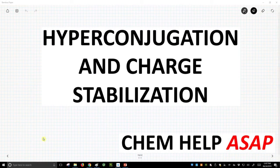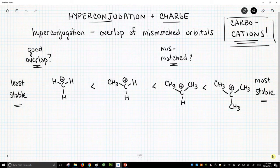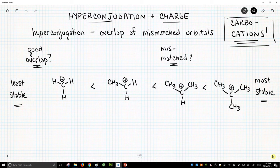Good day from ChemHelpASAP. We will now talk about how hyperconjugation affects charge stabilization. This is an effect that we typically see only with carbocations. So what is hyperconjugation? Hyperconjugation is this weird thing. It's the overlap of mismatched orbitals.